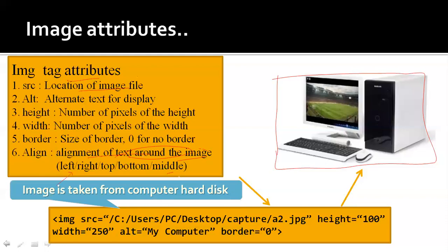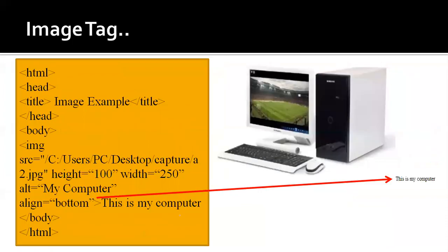The image is taken from the hard disk. As you can see here, if we write align equal to bottom, then some text — 'This is my computer' — is displayed at the bottom of the image. If we write top, then the text should display at the top. For left, right, and middle alignment values, you can check those yourself.